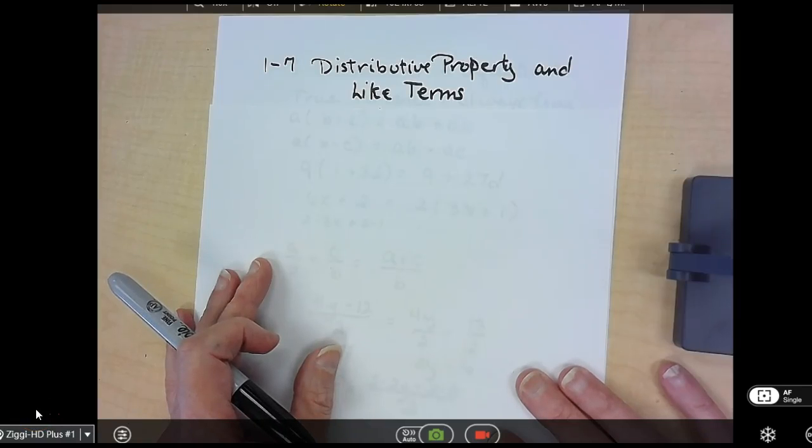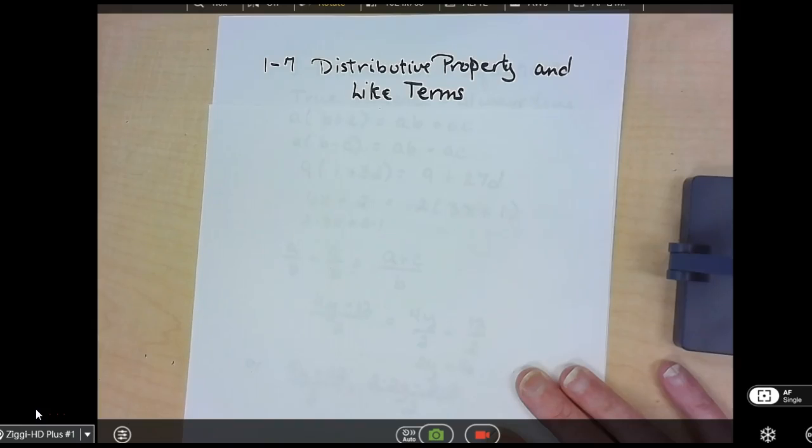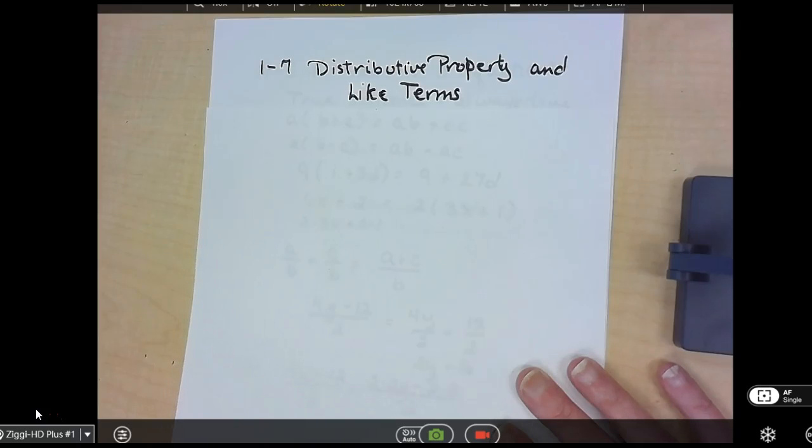We're on to section 1-7, distributive property and like terms. The reason these are combined is the book likes you to use distributive property when adding like terms. I'll just show you the easy way to do it.